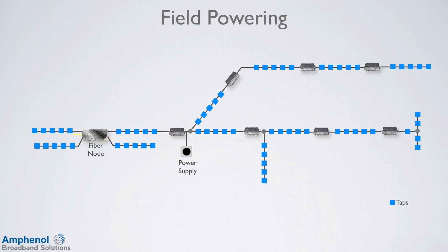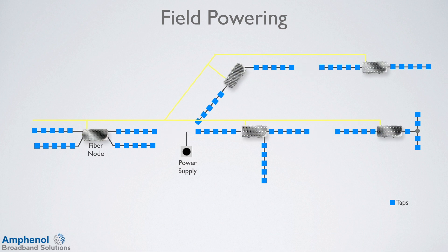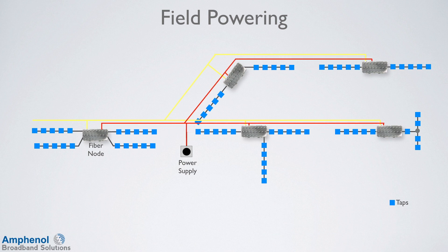When doing node splits, powering needs to be considered. Before the node splits, the power for the fiber nodes and amplifiers ran through the same coaxial cable as the RF. During the node installation and distribution plant re-tapping, the power path has been interrupted at several locations as shown here. Additional coaxial cable may be needed to connect the power path back through the re-tapped distribution, or to run dedicated cables just for power. Also, since remote PHY devices use more power, additional power supplies may be needed.